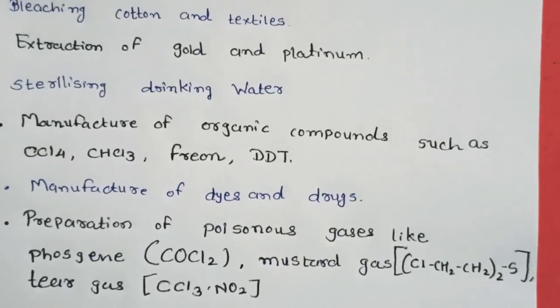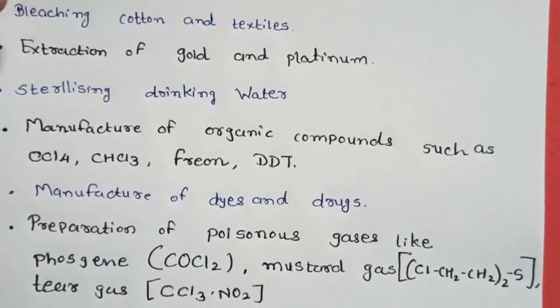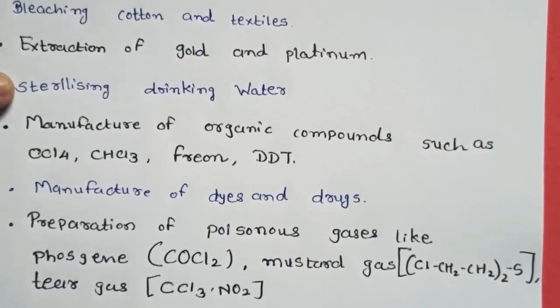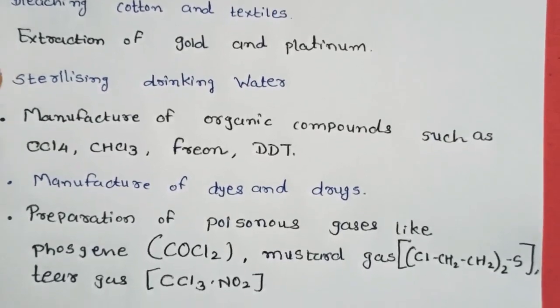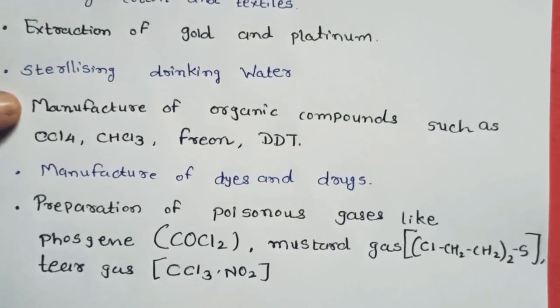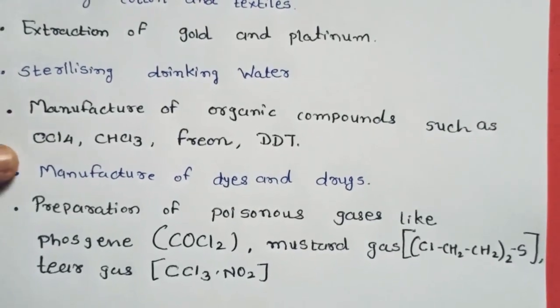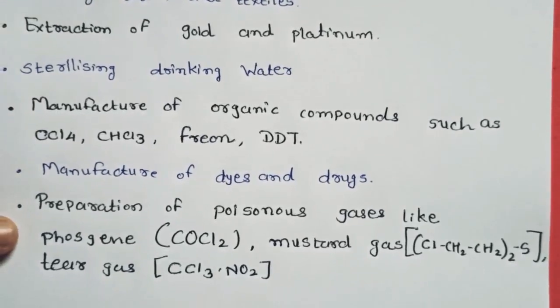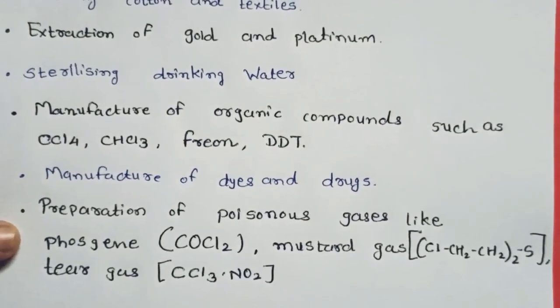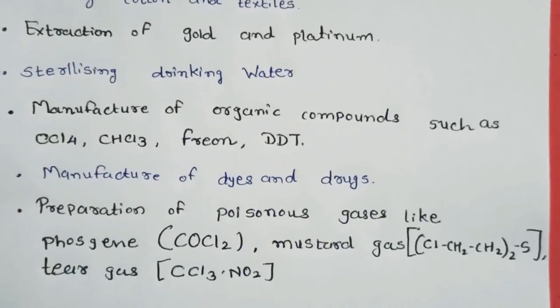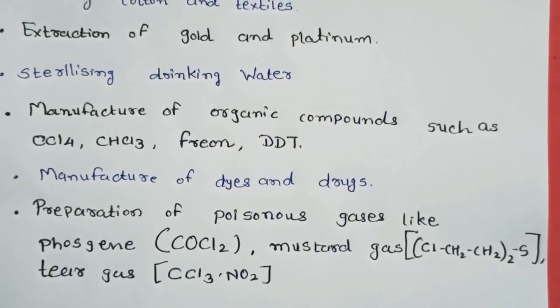So we have seen its uses. It is used as a bleaching agent, in extraction, in sterilization of water, in formation of many organic compounds, in drug preparation, and in the preparation of poisonous gases. I hope you understand the uses of chlorine. Thank you.